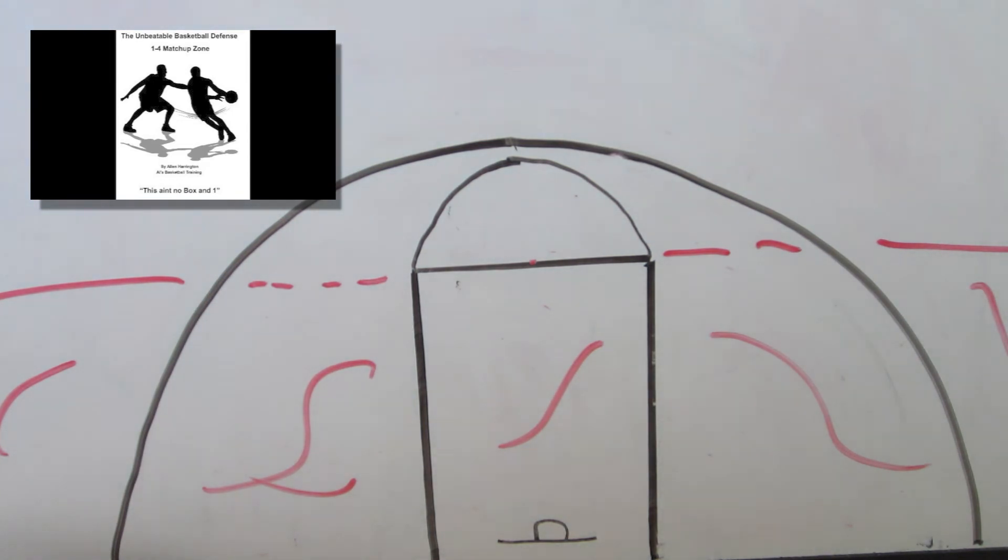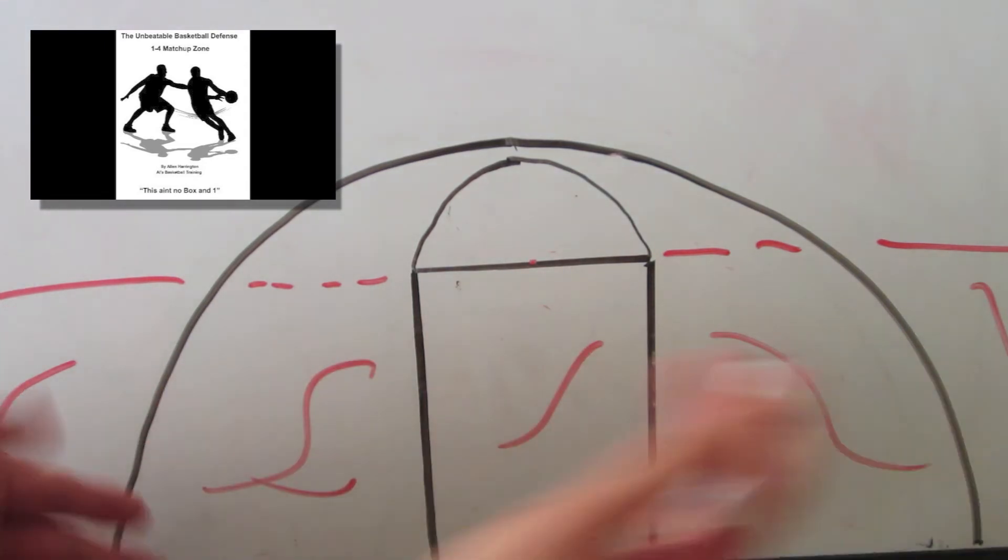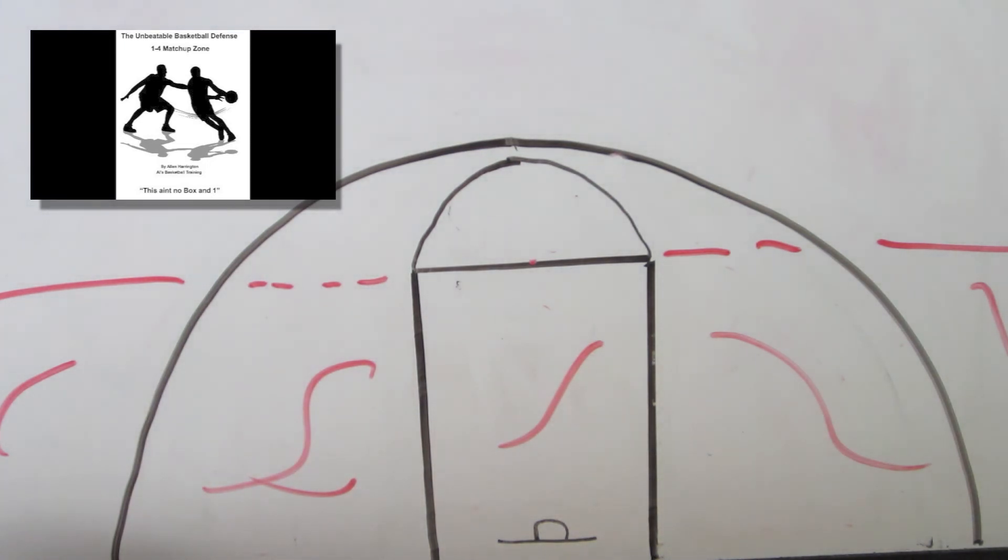Basically how it works, I'm not going to tell you how it works because you have to buy the book, but basically how it works is everything below here is a double team. The other team is going to get lots of turnovers and you're going to have lots of chances to score.